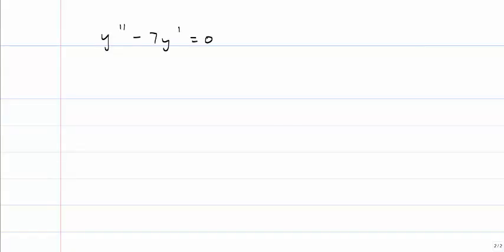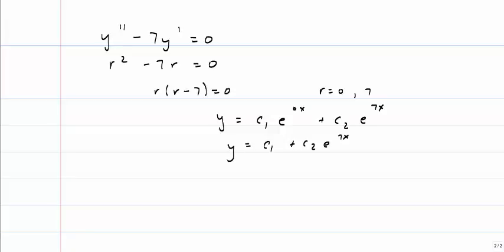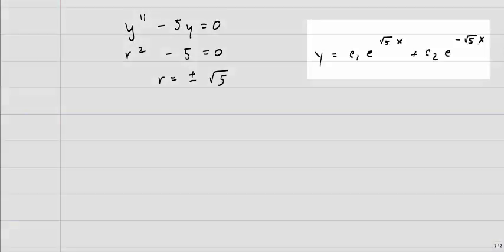Let's look at a few examples. If this is my differential equation, the first thing I do is write the characteristic equation. I would factor, and I would find my two solutions are 0 and 7. So that means y is equal to c1 e to the 0x, plus c2 e to the 7x. Of course e to the 0x is simply 1, so that would be my general solution. If instead I had an equation that looked like this, then my characteristic equation would look like this. Remember, there's no y prime, so there's no r term. In this case, r is equal to plus or minus the square root of 5. And now my general solution is simply this.